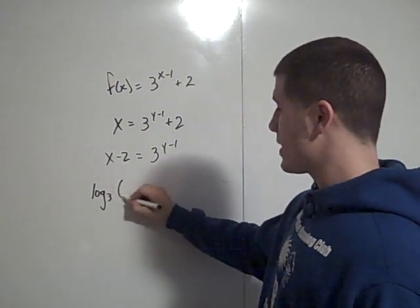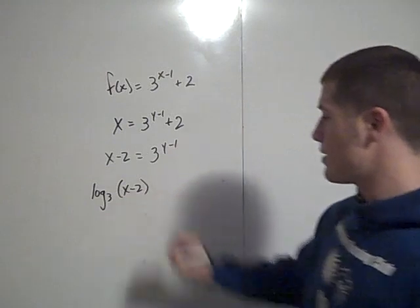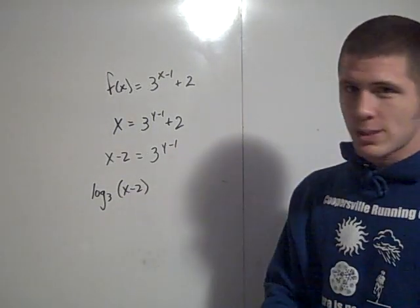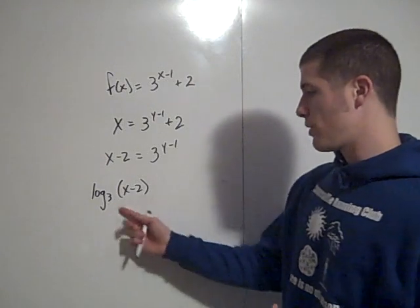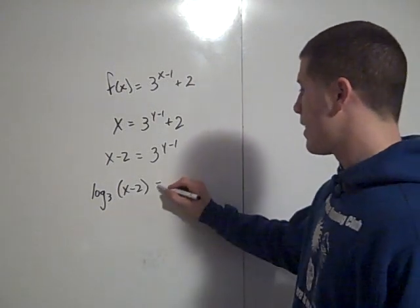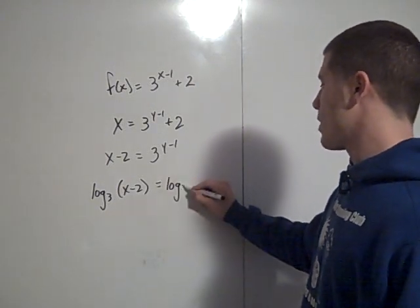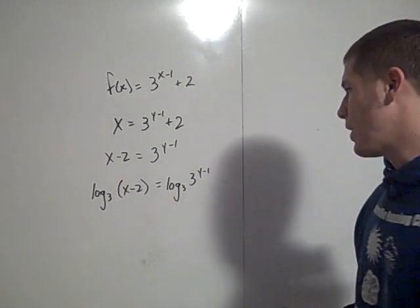So take the log base 3 of both sides. Log base 3 of x minus 2 in parentheses—it's not just the log base 3 of x, it's the log base 3 of x minus 2, so make sure you put parentheses around that quantity. This equals log base 3 of 3 to the y minus 1.